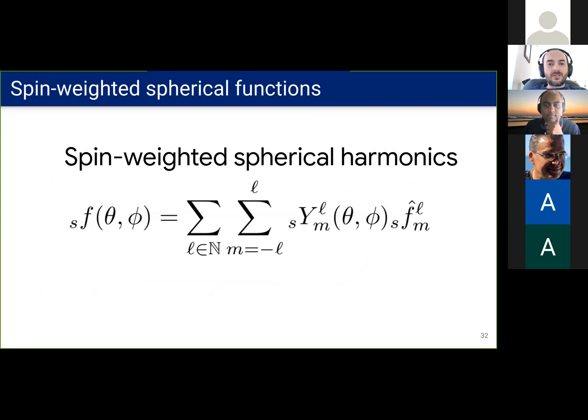Similarly to the standard case, there's a basis for these functions and it's called the spin-weighted spherical harmonics basis. Now there's an extra parameter s per basis element that encodes the spin weight. Again for spin weight zero, we recover the standard spherical harmonics.